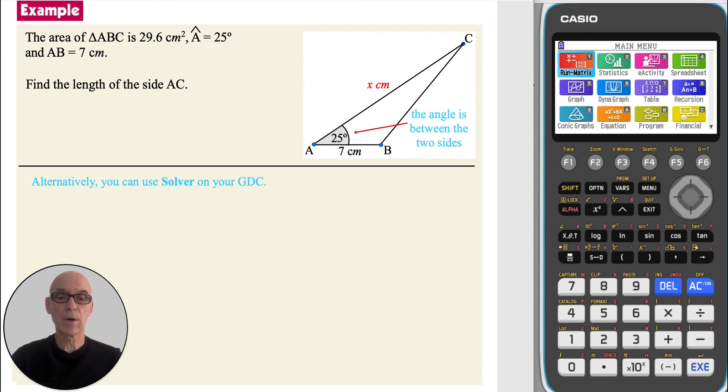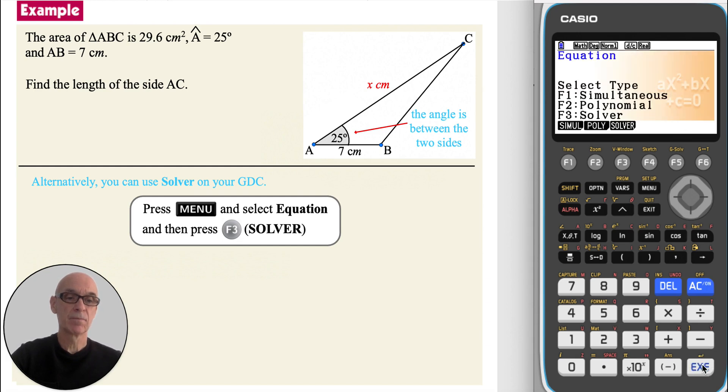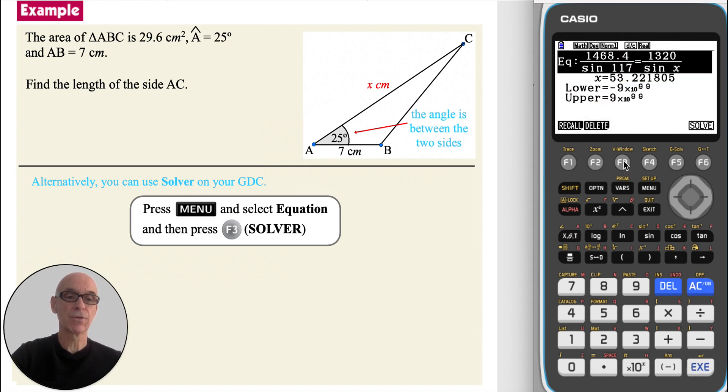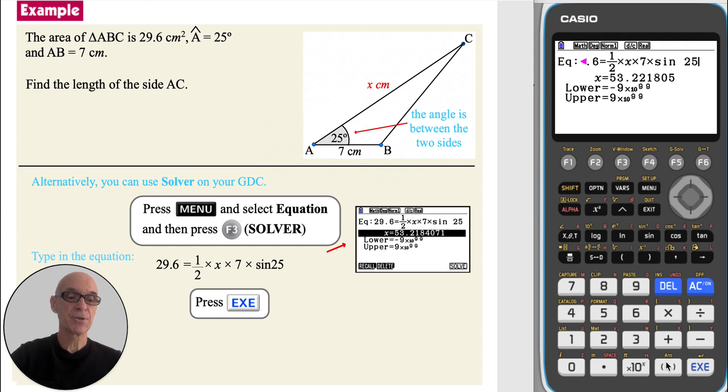To solve the equation on the calculator, from the main menu, select equation and press F3, solver. Type in the equation. So that's 29.6, pressing shift to access equals. Pressing the fraction button, entering 1 for the numerator, scrolling down, and entering 2 for the denominator. Pressing the right cursor to come back up. To multiply that by pressing the X variable button, and to multiply that by 7. And press multiply, followed by the sine button, and then entering 25 degrees for the angle.